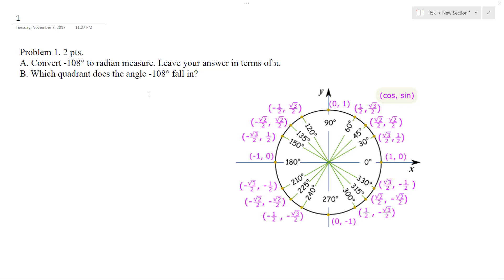I want to convert negative 108 degrees to radian measure and leave it in terms of pi. And then which quadrant does negative 108 degrees fall in?